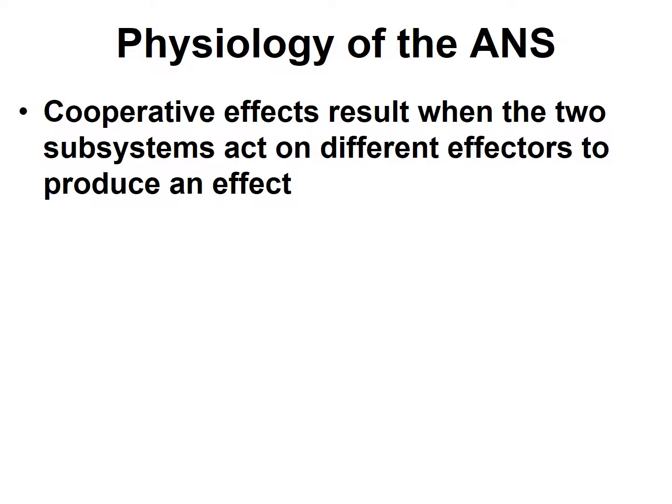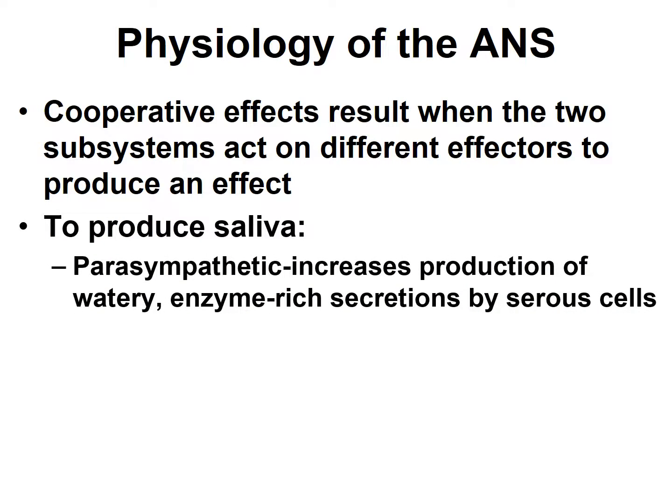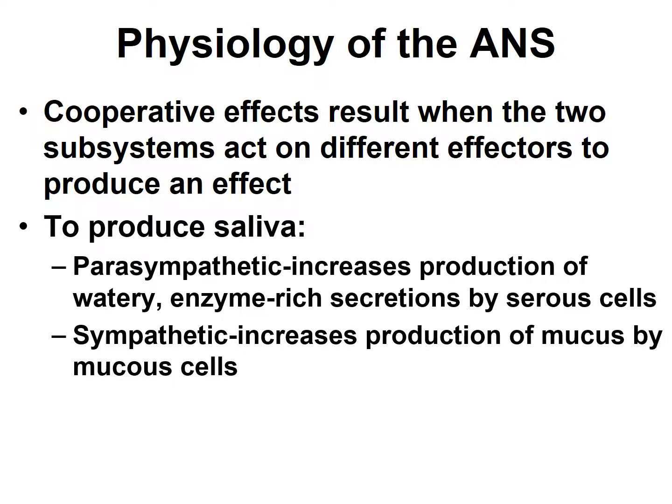Although we often think of the two subsystems as having opposite effects, there are situations where they actually work cooperatively to produce an effect. An example is the production of saliva. Saliva is produced by the salivary glands and contains multiple components. The parasympathetic subsystem increases the production of water and enzyme-rich secretions by serous cells. The sympathetic nervous system increases the production of mucus. So the two subsystems work cooperatively in the production of saliva.